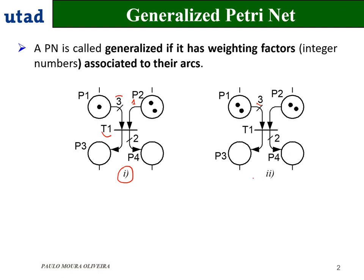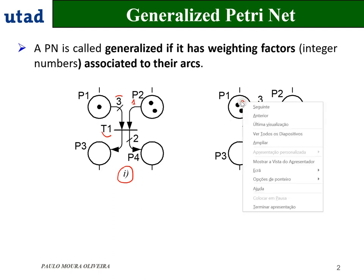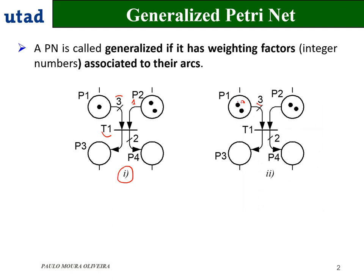When T1 is validated, we need to have 3 tokens, as we have here now. In this case, we have 3 tokens in P1, so we take 3 tokens from P1. This is validated.